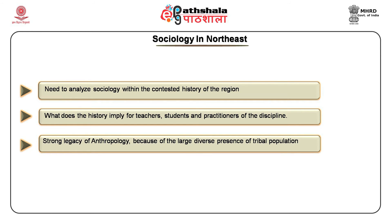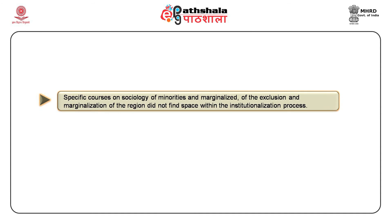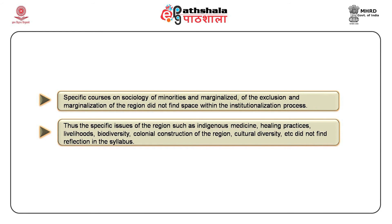Nanda argues that sociology as a discipline spread in the region from the 1960s onwards, but the region has a strong legacy of anthropology because of the large diverse presence of tribal population. The idea of the Northeast as a region always had an uneasy presence, and in this region nationalism and nation building is a very contentious issue. But such uneasiness and discomfort was never reflected in the issues introduced to be taught within sociology. In its process of institutionalization, the sociology syllabus presented an unproblematic idea of Indian society to its students, thereby continuing and reiterating the process of exclusion of the region. Specific courses on the sociology of minorities and the marginalized did not find space within the institutionalization process.